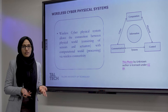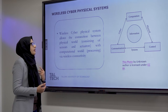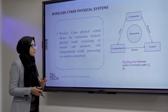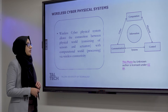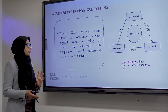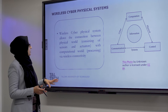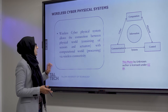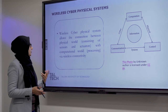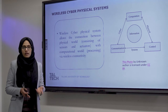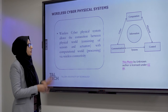When we have wired connectivity, it is simply a cyber physical system. But when we talk about wireless connectivity, we call it a wireless cyber physical system — a system that can help a physical system perform better by connecting to the cyber and communication domains. We have a physical world consisting of sensors and actuators, a computational world consisting of processing, and a communication domain providing connectivity between devices.